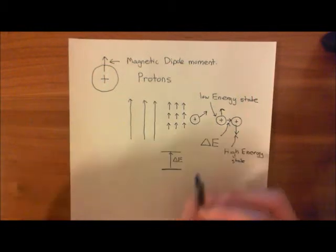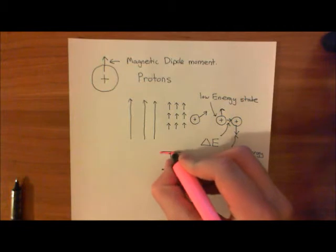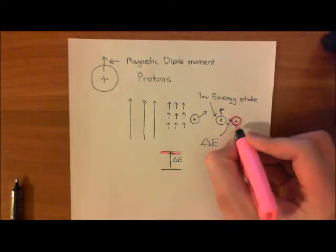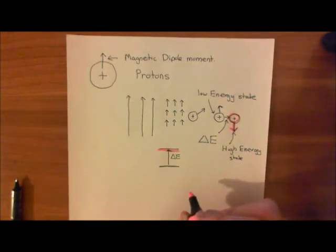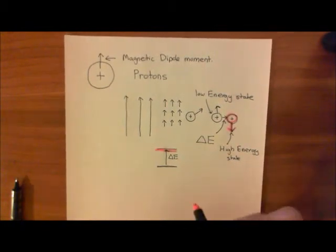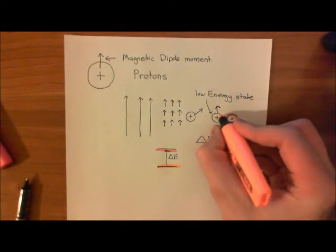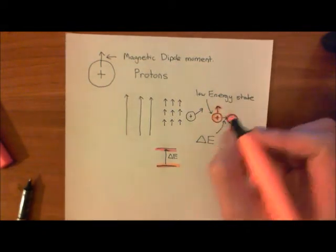So basically, this higher bar here represents this proton, which has its magnetic dipole moment perfectly pointing in the exact opposite direction to the direction of the magnetic field. And this bottom line represents the state where the proton has its magnetic dipole moment pointing in the direction of the magnetic field here.